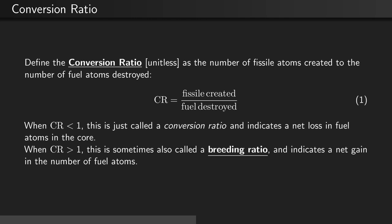When CR is greater than 1, this is sometimes also called a breeding ratio, and indicates a net gain in the number of fuel atoms in the core.